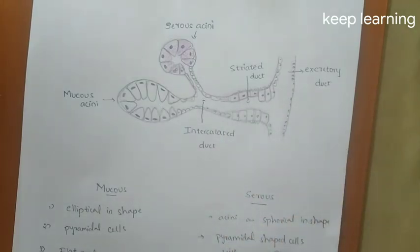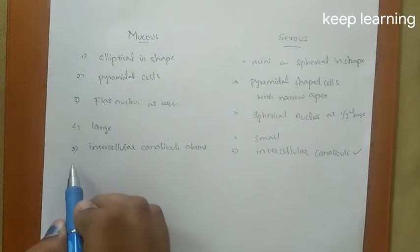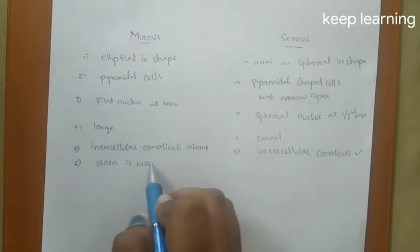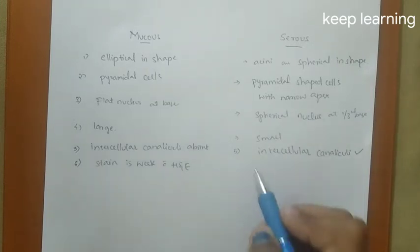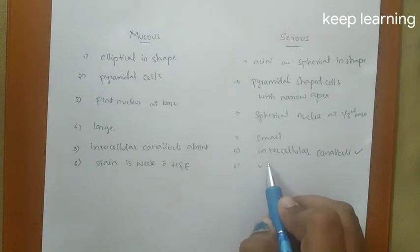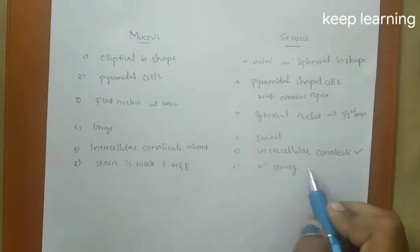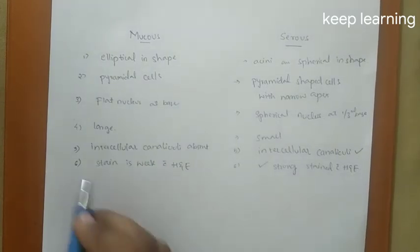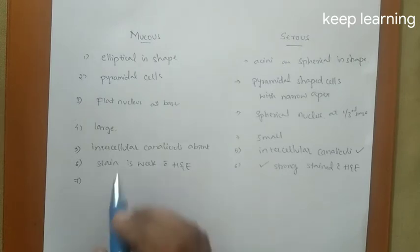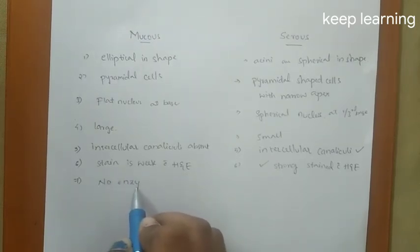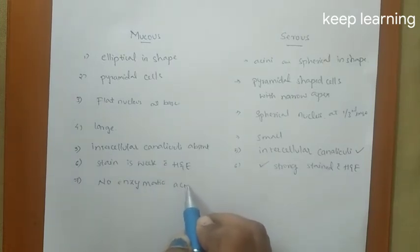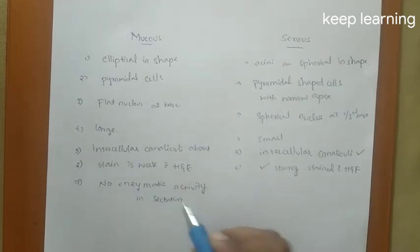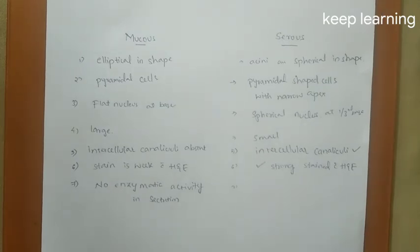Mucous cells stain weakly with H&E stain, whereas serous cells have a strong stain with H&E. Also, mucous cells do not secrete any enzymes, so there is no enzymatic activity in the secretion, whereas the serous cells' secretion has enzymatic activity.